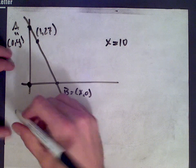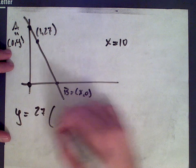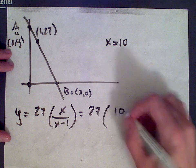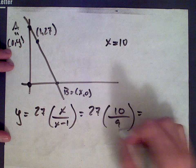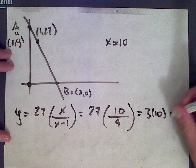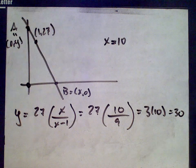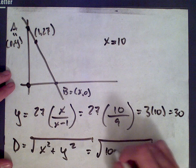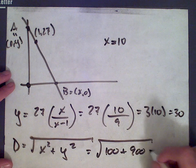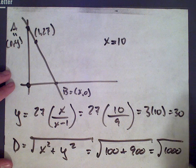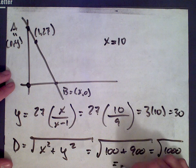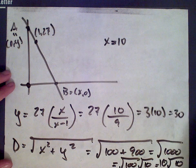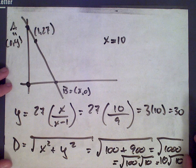So with x equals 10, y equals 27 times 10 over (10 minus 1) equals 27 times 10 over 9. Since 27 over 9 is 3, we get 3 times 10 equals 30. So when x is 10, y is 30. The distance d equals the square root of 10 squared plus 30 squared, which is the square root of 100 plus 900, equaling the square root of 1000. That equals the square root of 100 times the square root of 10, which is 10√10. That's the answer to question number 20.